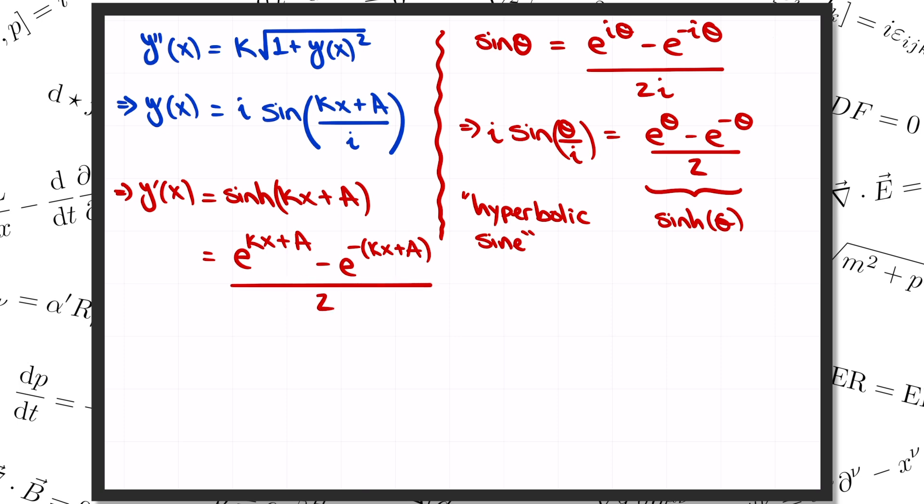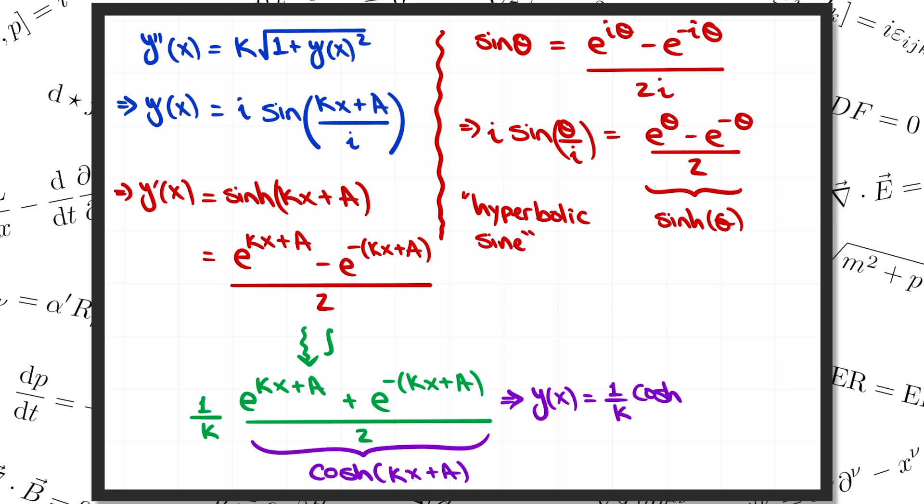Now we just have to integrate this function one more time in order to figure out y of x. We just get back the same exponential, e to the kappa x plus a divided by kappa, plus e to the minus kappa x plus a, all divided by 2. This function again has a special name, it's called cosh, the hyperbolic cosine. So finally we get y of x equals 1 over kappa times cosh of kappa x plus a plus b, where b is another integration constant. This is the solution to the equation that we've been trying to solve, and we'll see what it looks like in just a second.